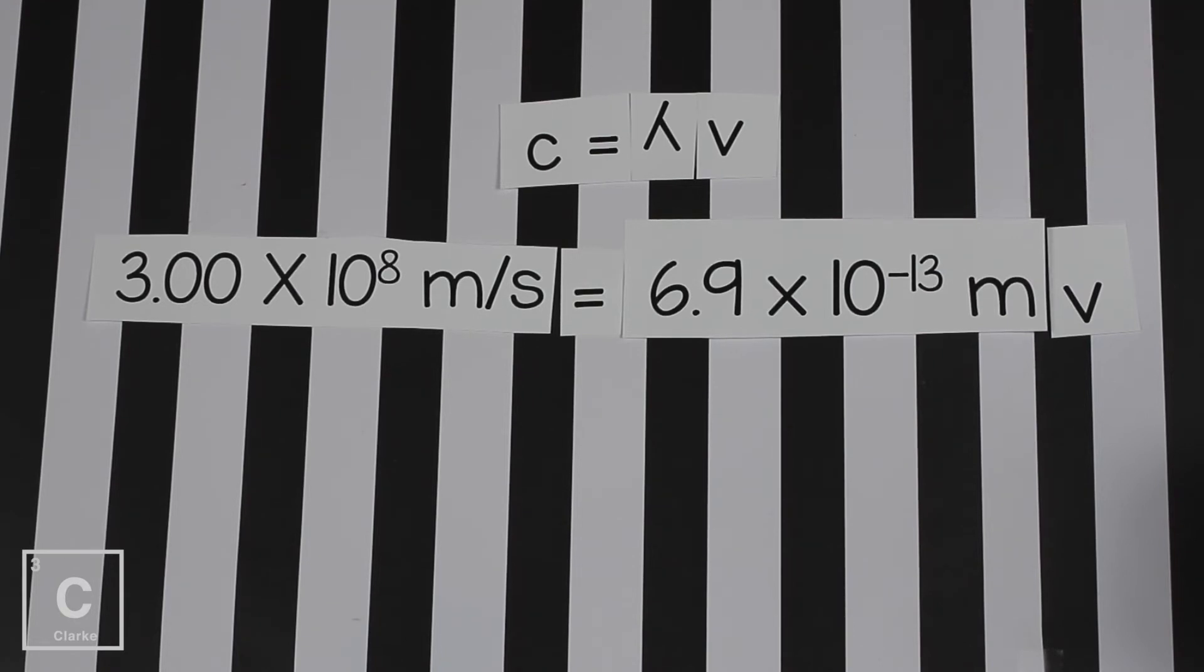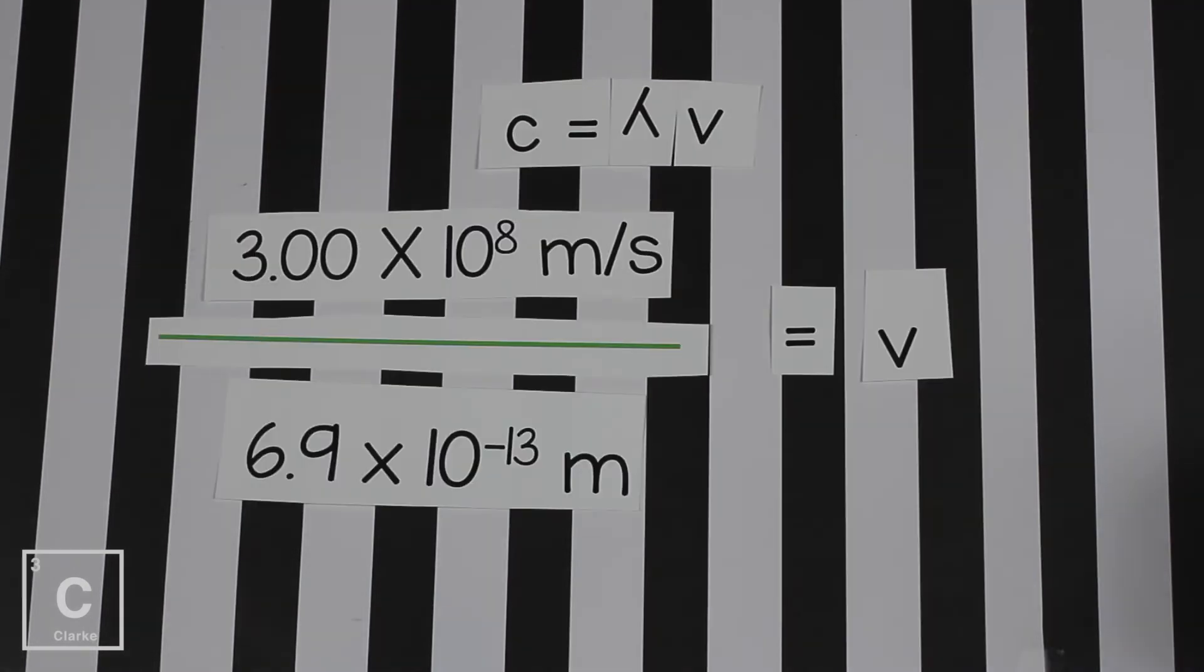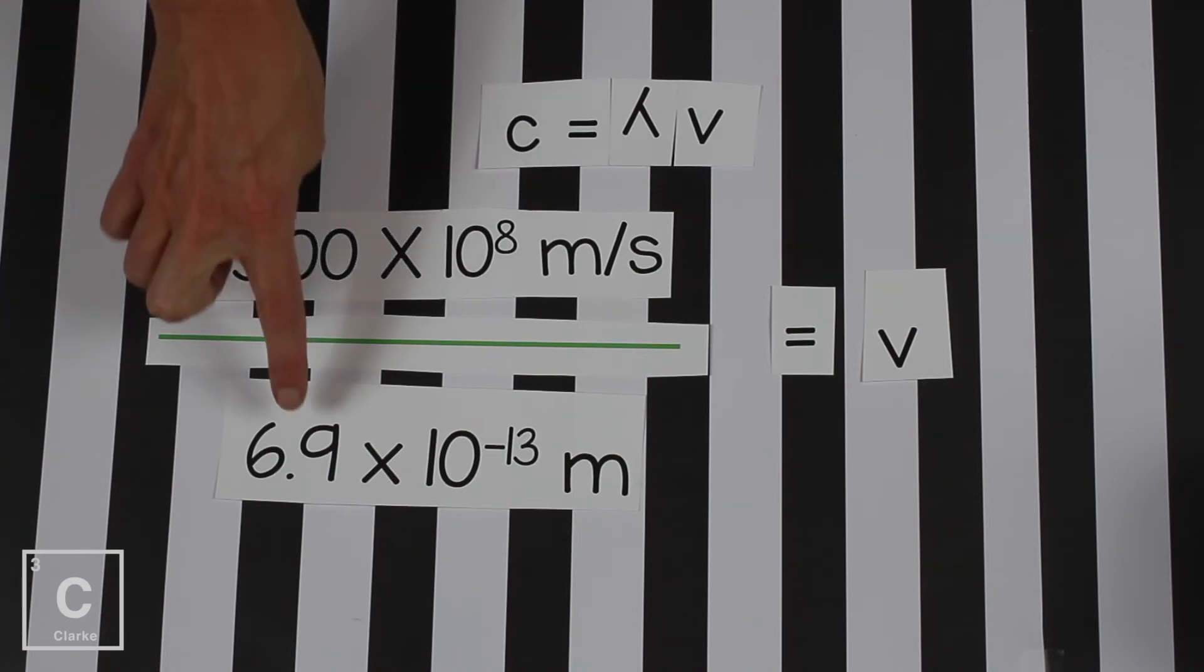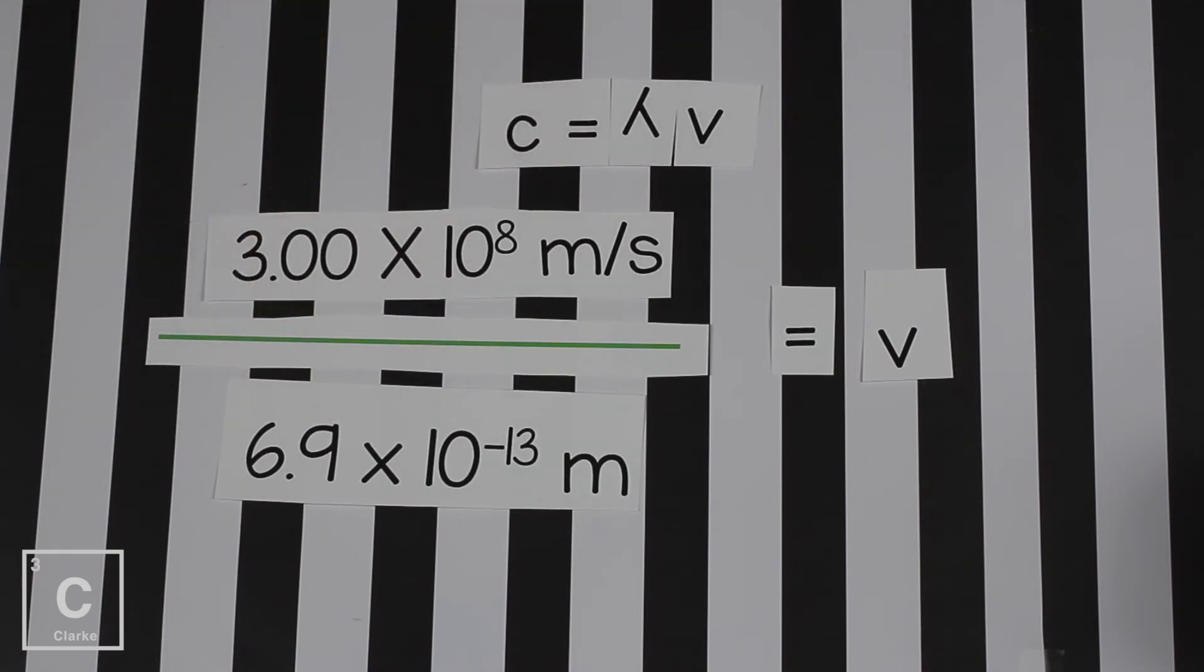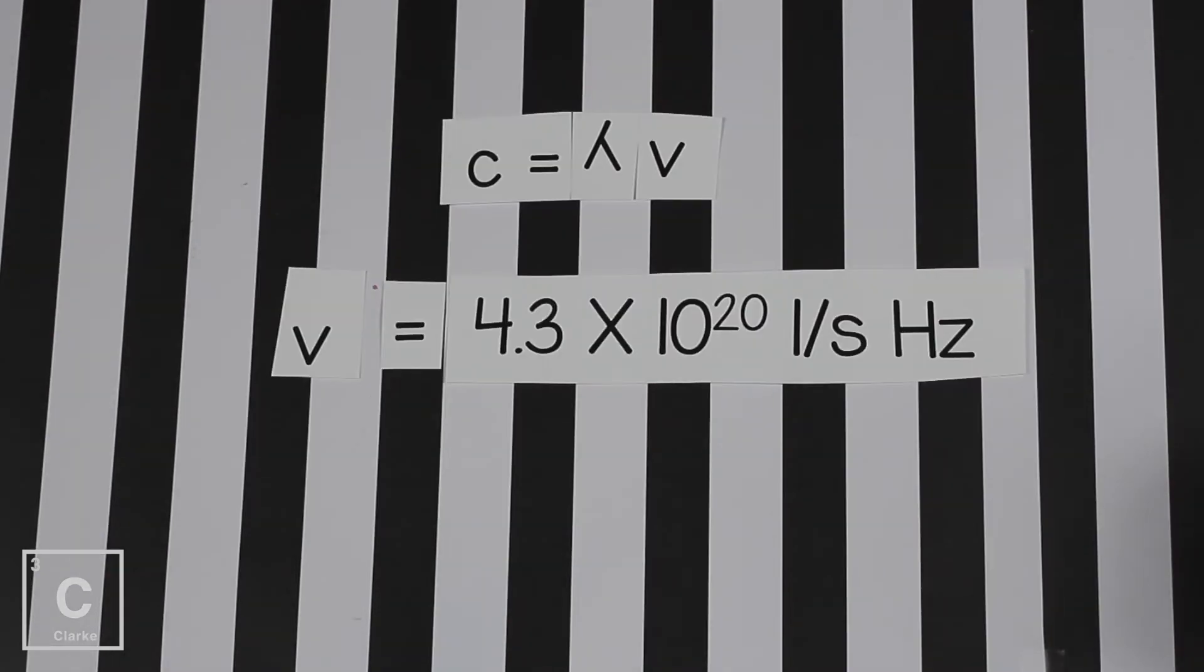Now we want this to say frequency equals. So to do that, we are going to divide. After we rearrange our problem, we've got the speed of light divided by the wavelength. Let's take notice that our given number only had two sig figs. So our answer needs to have two sig figs. So we put this in the calculator and this is what we get. Frequency equals 4.3 times 10 to the 20.